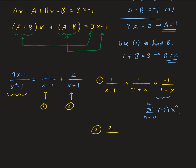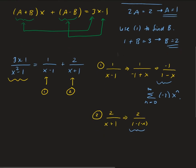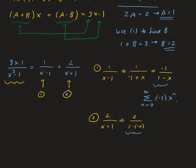For the second part, we have 2/(x + 1), which can be written as 2/(1 - (-x)). Applying the geometric power series definition, that means we have the infinite series of 2 times (-x) to the n.